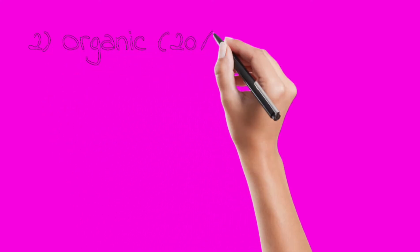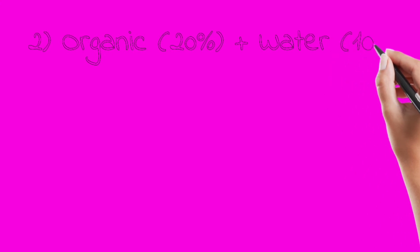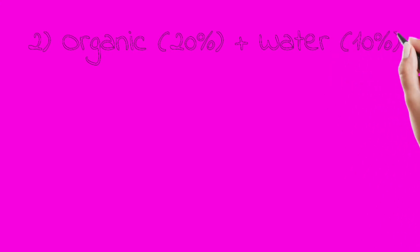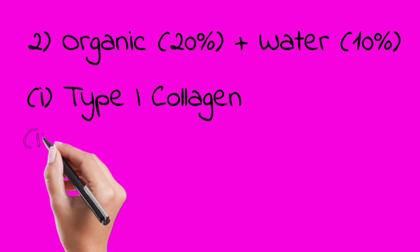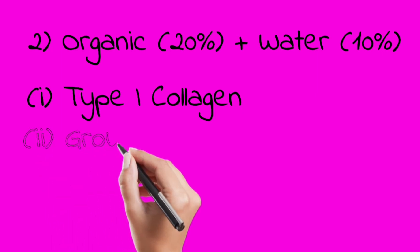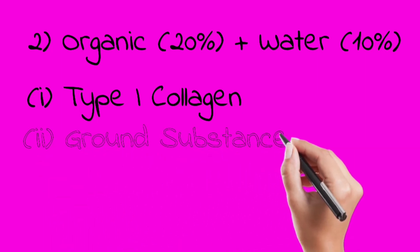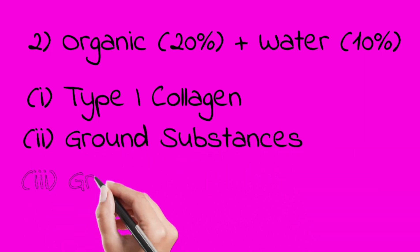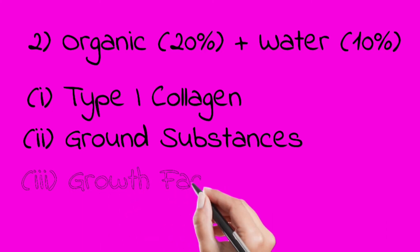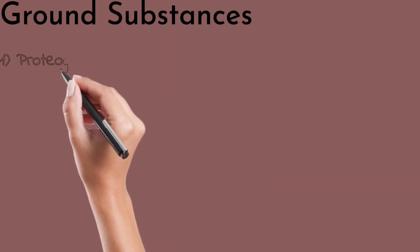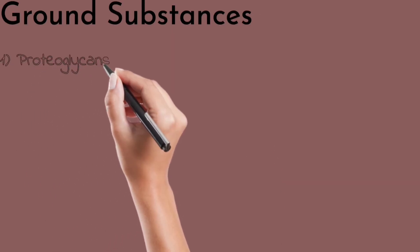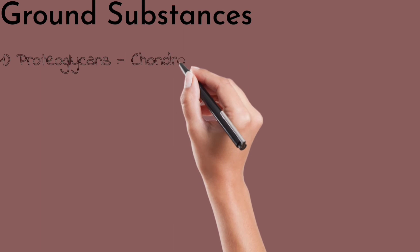The organic portion is 20 percent and water is 10 percent. This organic matter is mainly Type 1 collagen — it is a very important question in viva that it is Type 1 collagen. There are also ground substances and growth factors.